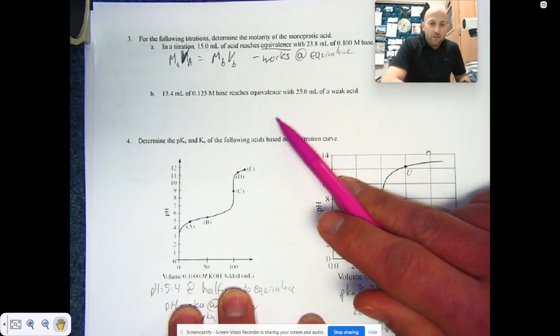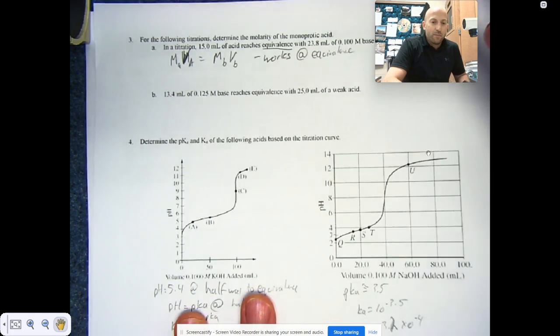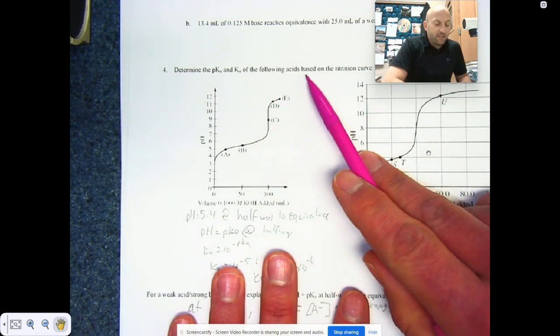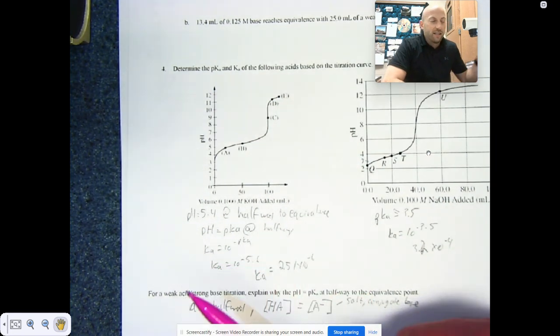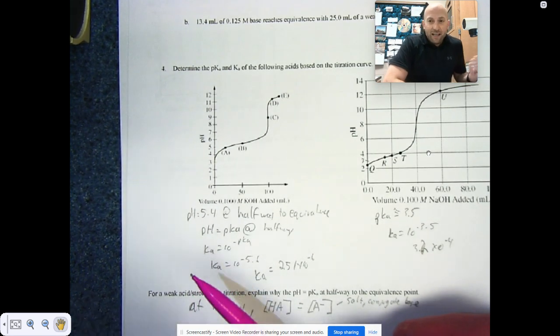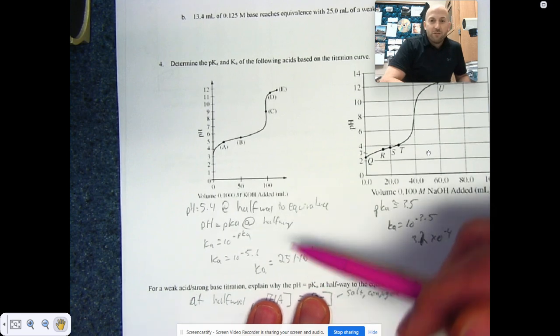That's the hint I'm going to give you. I think you can figure out the rest. Let me know if you can't, but that's my tip for you. Determine the pKa and the Ka of the following acids based on the titration curve. Again, I know you can screenshot this if you want to get it. More importantly that you know how to do it.